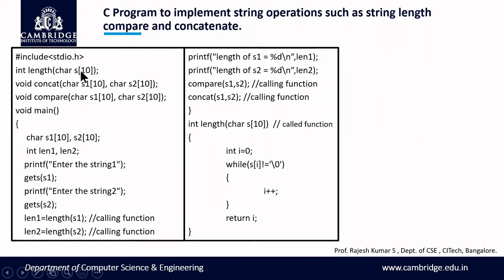For the length function we are passing only one parameter — an array of type character — and this function returns a value, so the return type is integer. For the concatenate function we pass two arguments of character type and the return type is void because this function is not returning any value. The third function is compare, also passing two parameters, and the return type is void because compare will not return any value to the calling function.